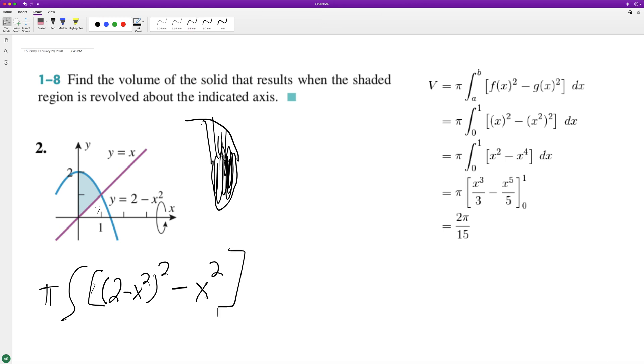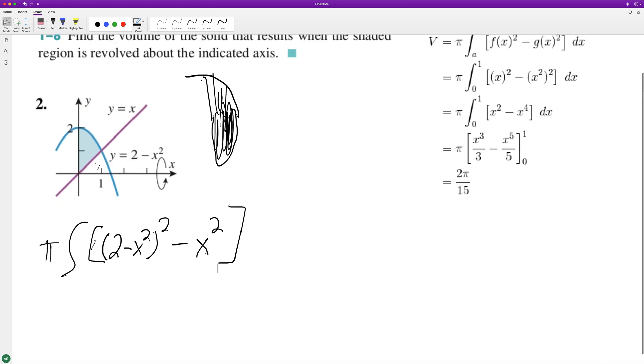Okay, so we need to integrate that. So when we integrate that, what we end up with is, let me do this really quick, so it ends up being 4 minus 4x squared plus x raised to the 4th minus x squared.